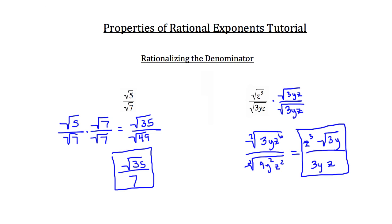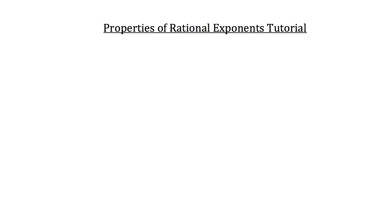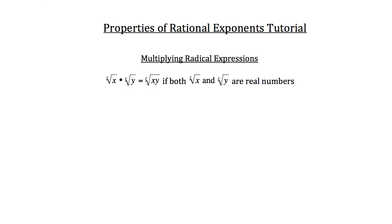Now let's talk about multiplying radical expressions. Here's a generic example: if you have the z root of x times the z root of y, that would equal the z root of x times y, so long as both are real numbers. For example, let's use the square root — so z equals 2 — with x equal to 4 and y equal to 25. So the square root of 4 times the square root of 25.